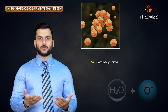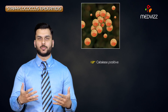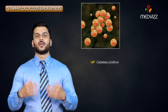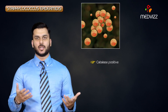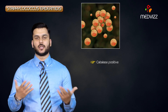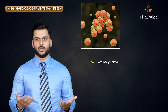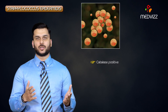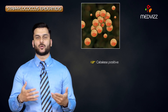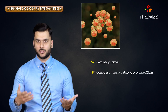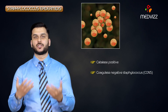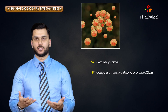Apart from this, how do you differentiate other species of Staph? We have a test called the Coagulase test. Organisms which are negative for the Coagulase test are called Coagulase Negative Staphylococcus, or CoNS.